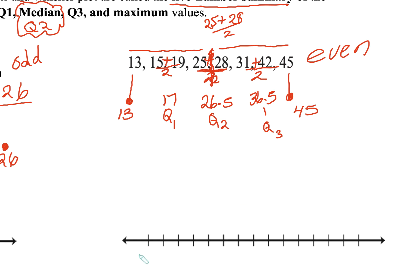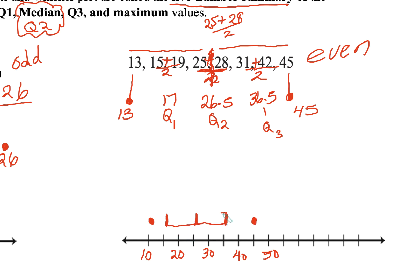We use our number line. Our minimum value is at 13, our Q1 is at 17, our Q2 is 26.5, our Q3 is at 36.5, and 45 is our maximum value. Let's make our box, put in our whiskers. That is our box and whisker plot.